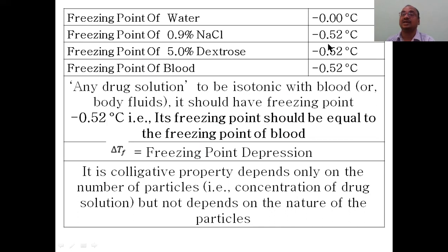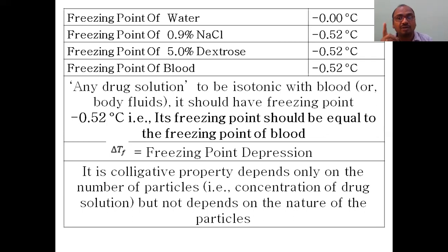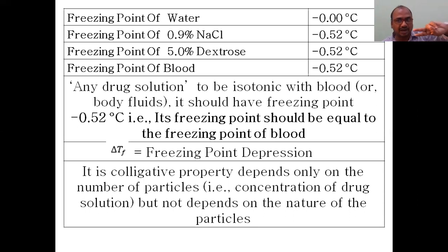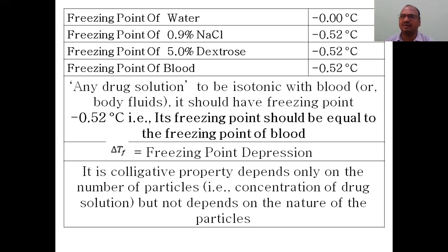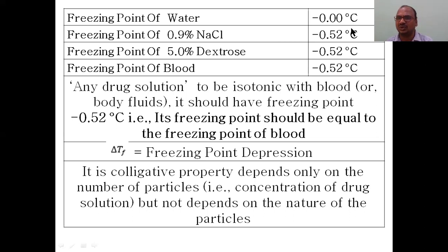That's why we always use 0.9% NaCl as normal saline when it is used alone. For dextrose alone, 5% dextrose has a freezing point of exactly minus 0.52°C — that's why it is always 5% dextrose. These values you have to fix in your mind. Freezing point of the blood is minus 0.52 — you have to match it exactly.